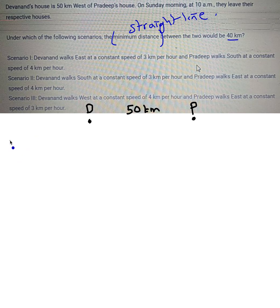Now you have to evaluate different scenarios. The first scenario is Devanand walks east at a speed of 3 kilometers per hour, whereas Pradeep walks south at the rate of 4 kilometers per hour.